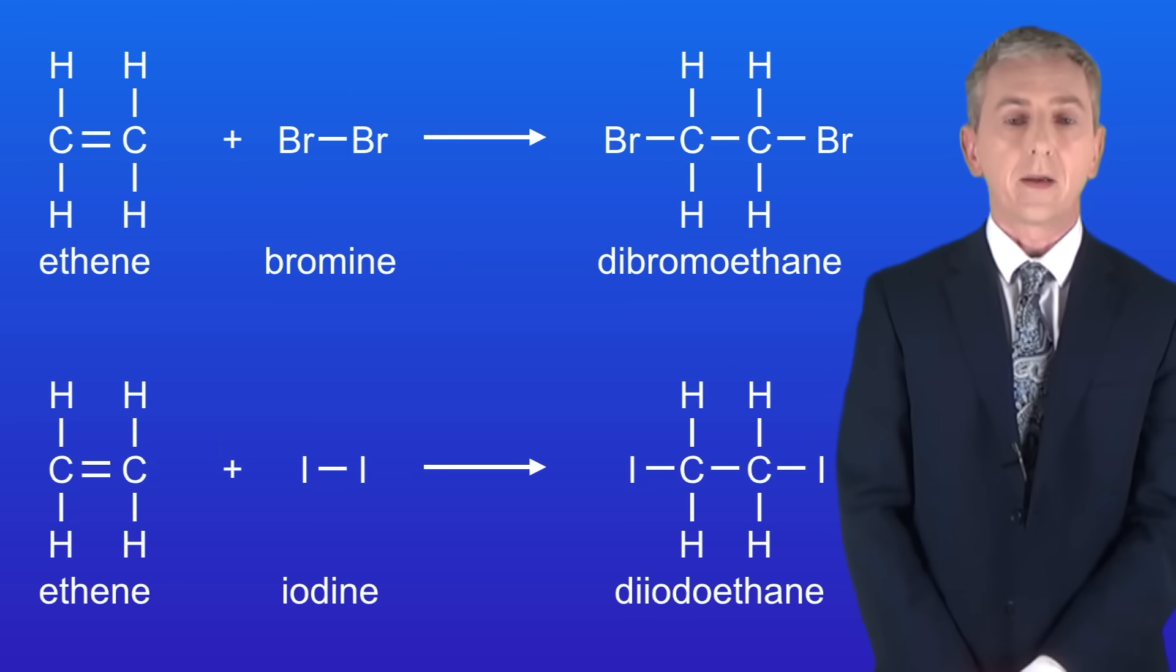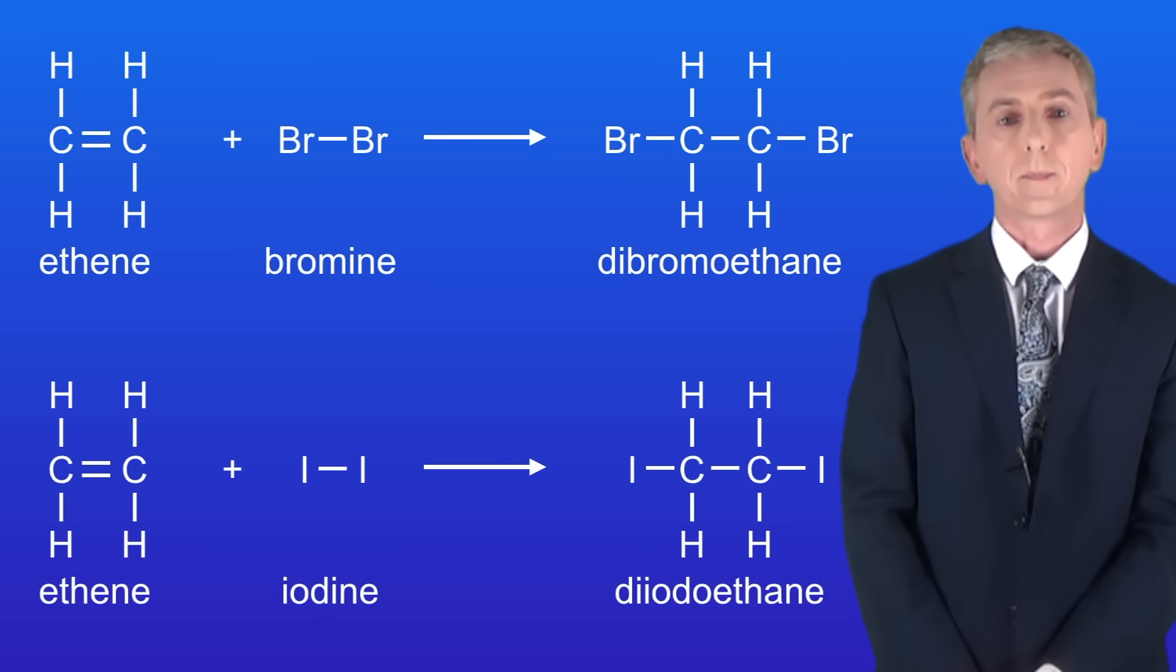Now the halogens bromine and iodine react in the same way. I'm showing you here ethene reacting with bromine to make dibromoethane and ethene reacting with iodine to make diiodoethane.